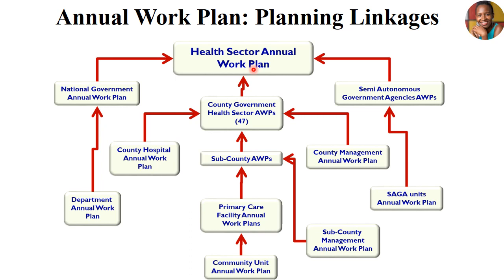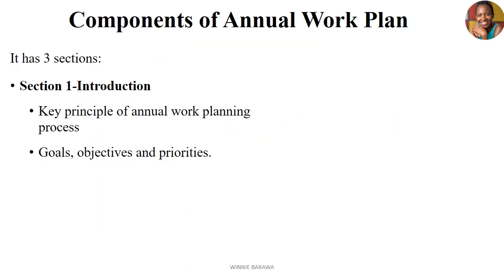For example, in a given year the national annual plan for health might be to reduce maternal mortality. That means all levels across the country will be working towards that goal, with every county expected to submit their targets and deliverables in regard to that national sector annual work plan.